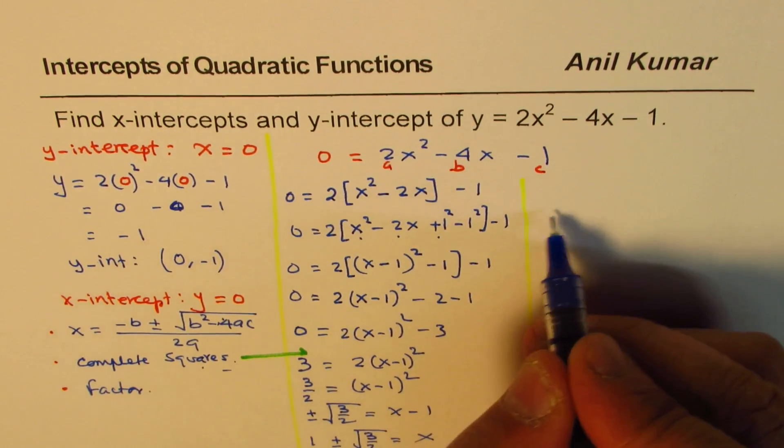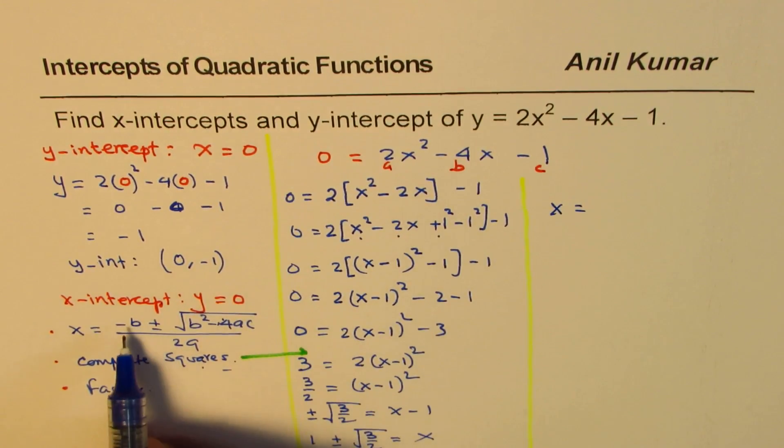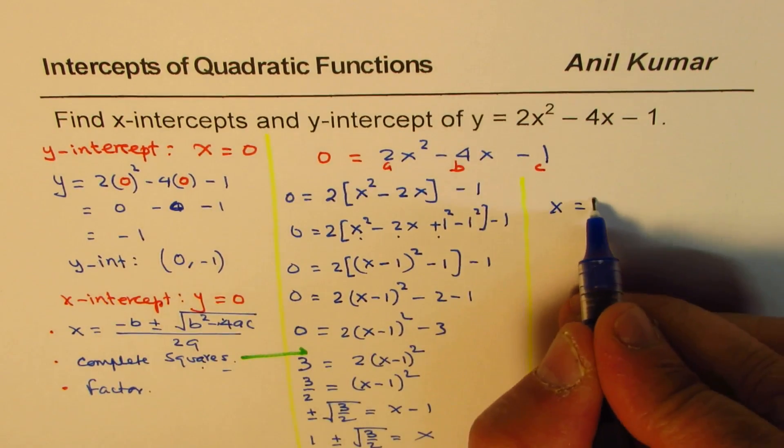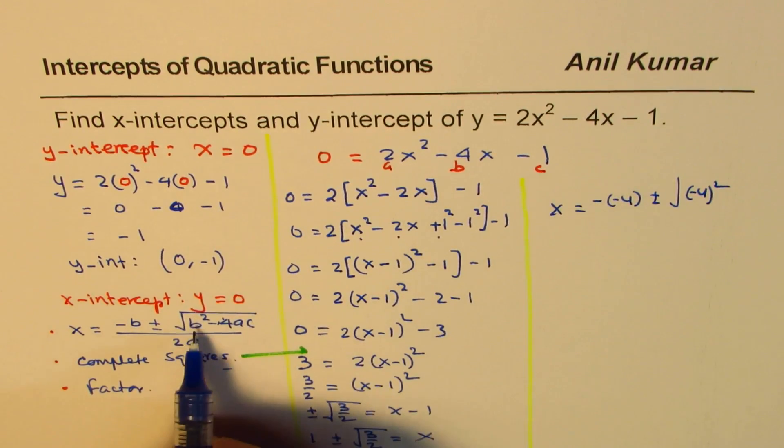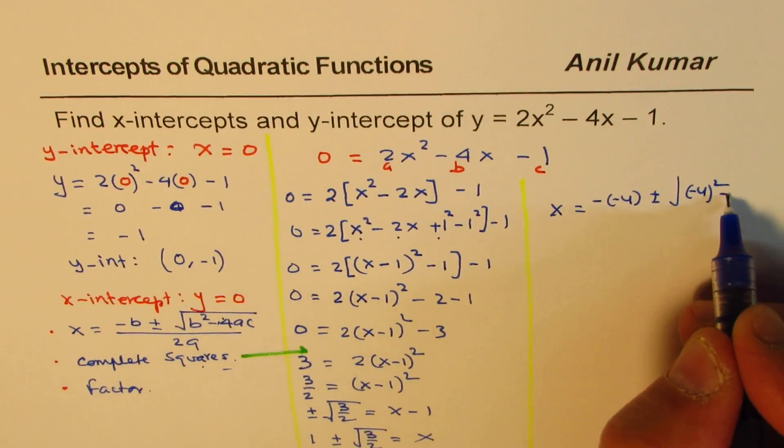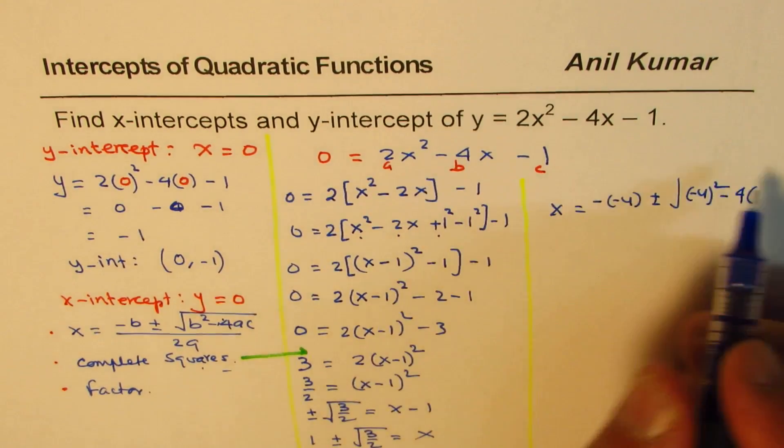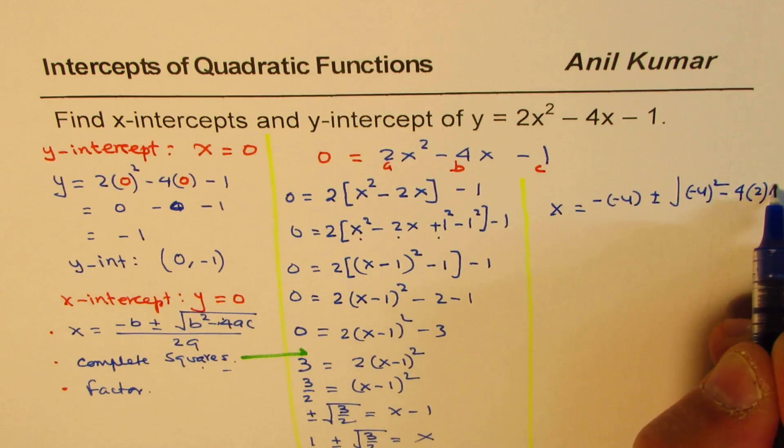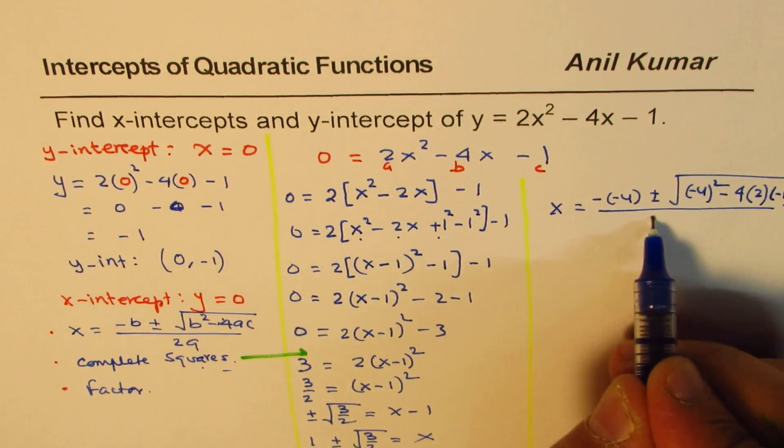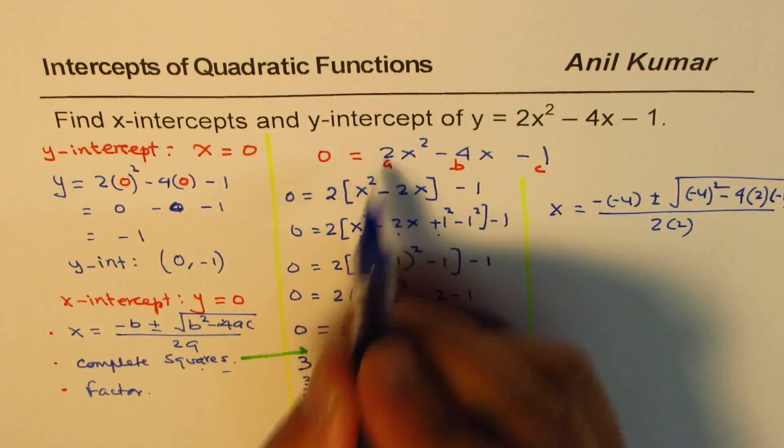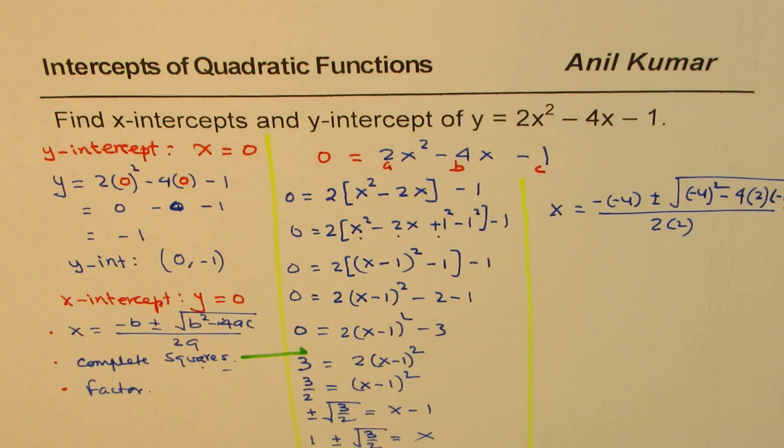To find x, let's substitute the values minus b. So minus of minus 4, minus of minus 4 plus minus square root of minus 4 square, so this is b squared, minus 4ac, minus 4 times a is 2, c is minus 1. Square root divided by 2 over a, which is 2. So that is what we do.